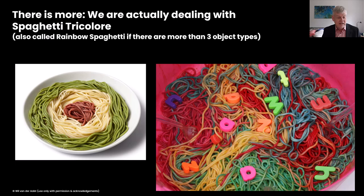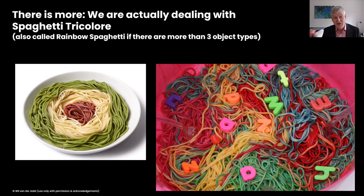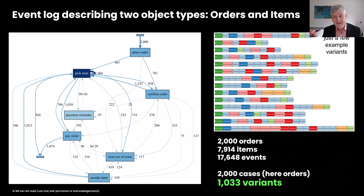What is relatively new is the realization that we often look at multiple types of cases interacting with each other. If we try to create a process model describing all these different object types simultaneously, it's like looking at the process in two dimensions when it actually has three dimensions. The third dimension is the color of the spaghetti. That's why we talk about rainbow spaghetti processes — there is structure, but because we do not see the color of the spaghetti, we miss it.